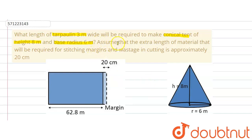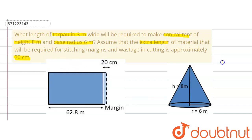The question further says that the extra length of material required for stitching margins and wastage in cutting is approximately 20 cm. So this extra length will also be considered while finding out the total length of the tarpaulin required.